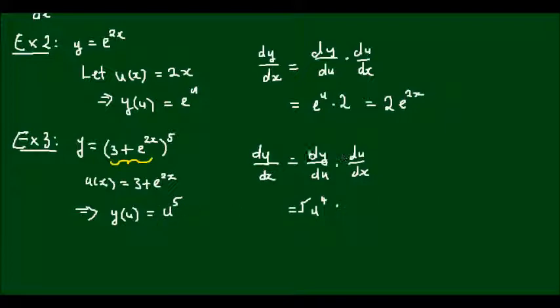Now, the du/dx term: the 3 differentiates to 0, and e^(2x), we found out before, differentiates to 2e^(2x). So in this case, we had to utilize the chain rule twice. This now evaluates to 10u^4 e^(2x). Which, if I sub u back in, I'll get 10e^(2x)(3 + e^(2x))^4.